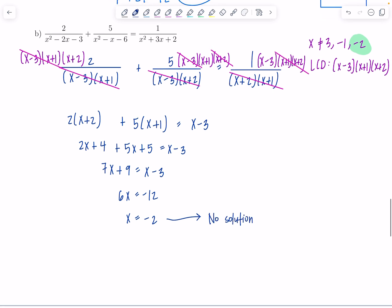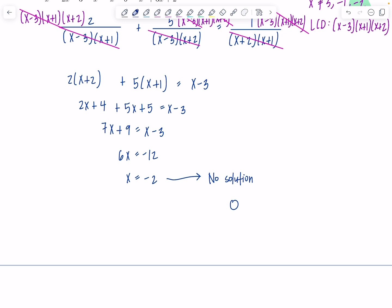Another way you could write no solution is this zero with the line through it. That means no solution. It stands for the empty set. Third option. You could draw an actual empty set with nothing inside it. Yes. That's legitimate notation. The one thing you cannot do is put the empty set inside a set. Now, that set is non-empty. So, don't do that. That means something else. But here's your three options for no solution. Ask your instructor what they like though.